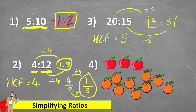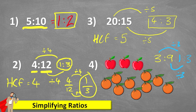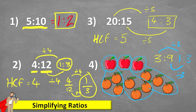Question 4 looks a little different, and the question is: what is the ratio of apples to oranges? Let's find out what the ratio is to start with. We have 3 apples and 9 oranges. Therefore my ratio is 3 to 9. But is that its simplest form? No, because I can see a common factor of 3. 3 divided by 3 is 1, and 9 divided by 3 is 3. So we have 1 to 3. We can double-check that by making sure that for every 1 apple we have 3 oranges, for every 1 apple we have 3 oranges, and for every 1 apple we have 3 oranges. So we know we're correct.